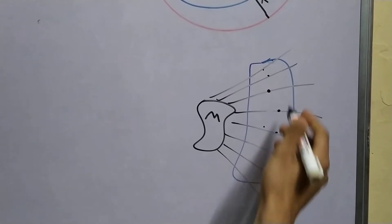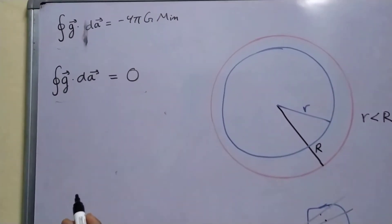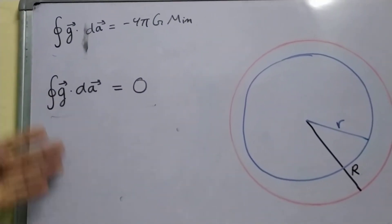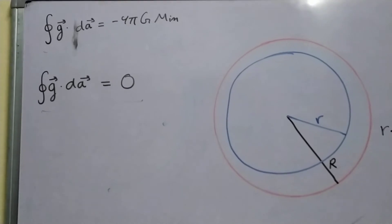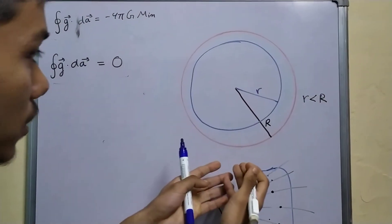So, just because the flux is 0 doesn't mean that our field is 0. How do we continue from this step?